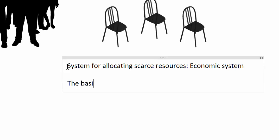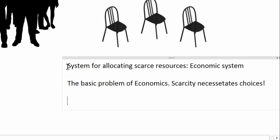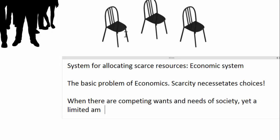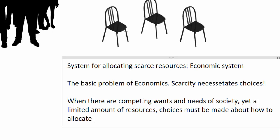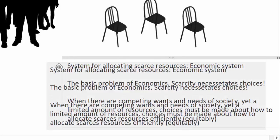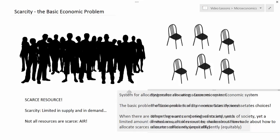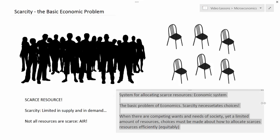Scarcity is the basic problem of economics. The very reason we have a social science known as economics is to help society deal with the scarcity of natural and other resources that we depend on for our well-being. Scarcity necessitates choices. When there are competing wants and needs of society yet a limited amount of resources, choices must be made about how to allocate scarce resources efficiently and, sometimes, equitably. The very problem of scarcity gives rise to the need for a system for allocating scarce resources between society's competing wants and needs.